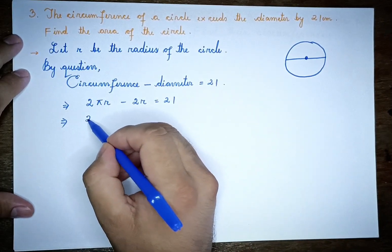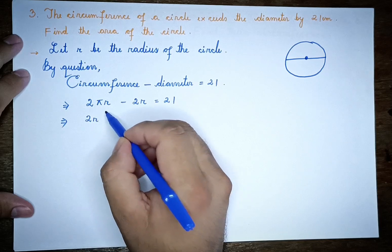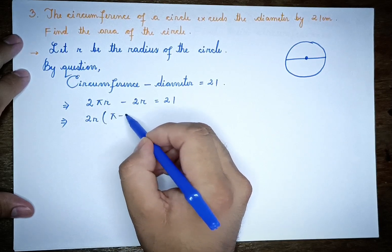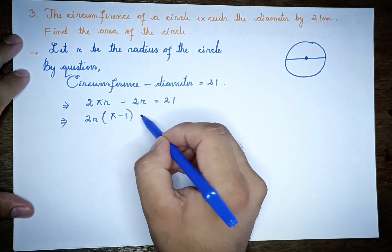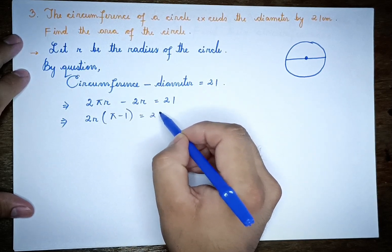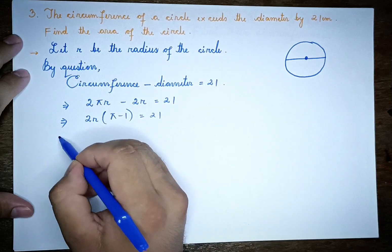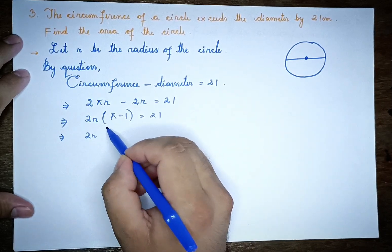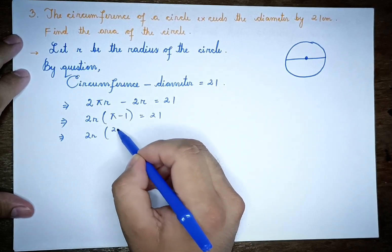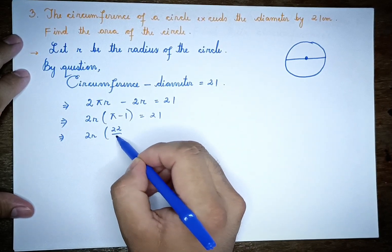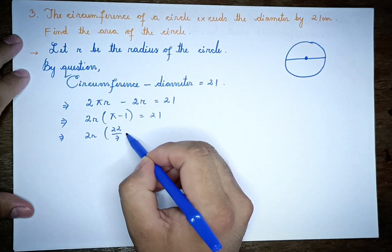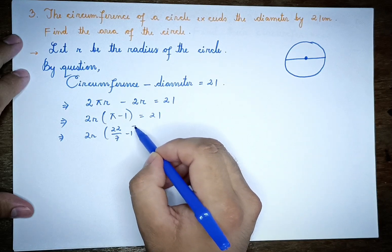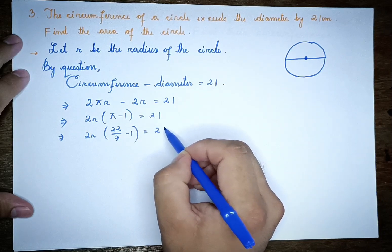Factoring out 2r: 2r(π minus 1) equals 21. Substituting π = 22/7, this becomes 2r times (22/7 minus 1), which equals 21.